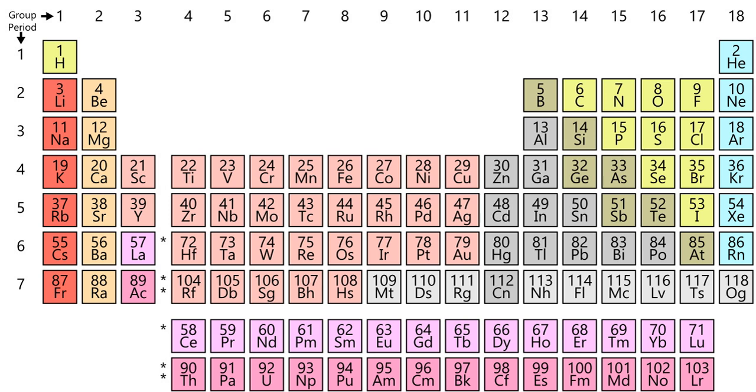As a special case, the three naturally occurring isotopes of the element hydrogen are often specified as H for 1H, D for 2H, and T for 3H. This convention is easier to use in chemical equations, replacing the need to write out the mass number for each atom. For example, the formula for heavy water may be written D2O instead of 2H2O.